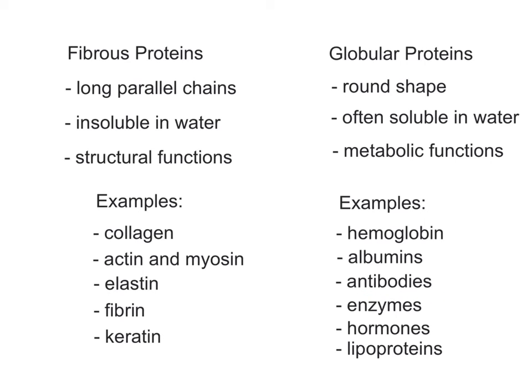Additional globular proteins include antibodies, which defend the body against foreign substances and microbes; enzymes, which act as chemical catalysts; some hormones, like insulin, which helps balance blood glucose levels; and lipoproteins, which transport lipids through the blood.